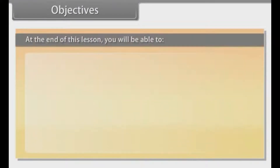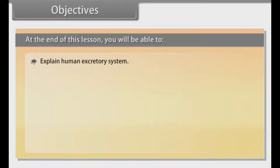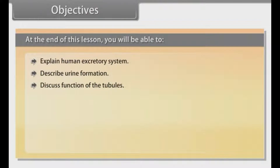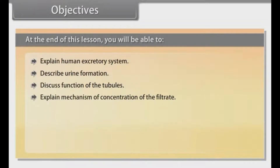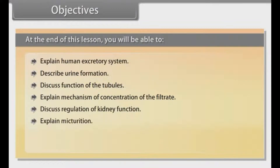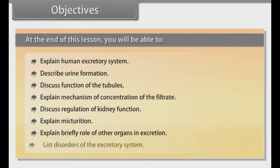Objectives. At the end of this lesson, you will be able to: explain the human excretory system, describe urine formation, discuss functions of the tubules, explain the mechanism of concentration of the filtrate, discuss regulation of kidney function, explain micturition, briefly explain the role of other organs in excretion, and list disorders of the excretory system.